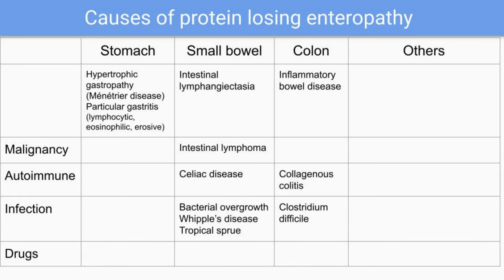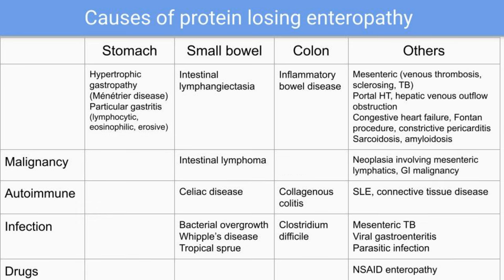Going down to the colon, apart from inflammatory bowel disease: autoimmune includes collagenous colitis; infection includes Clostridium difficile, that is pseudomembranous colitis, which can cause protein-losing enteropathy.